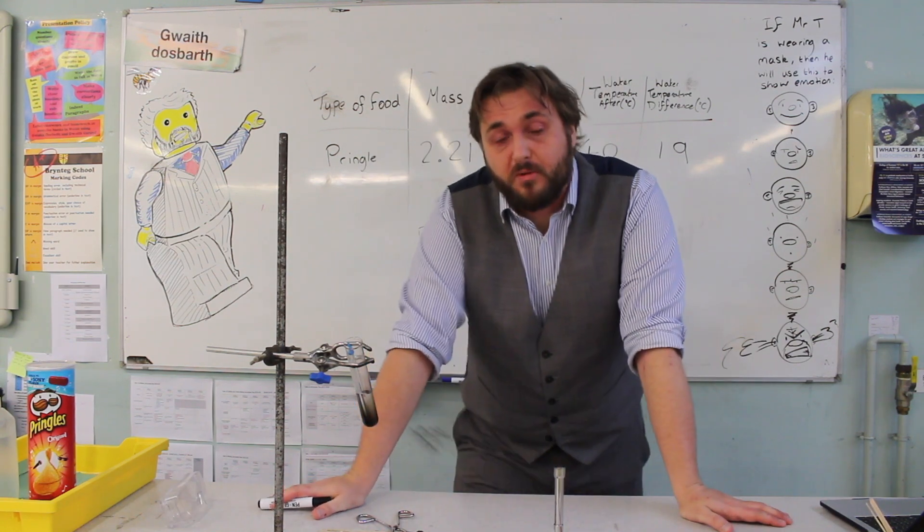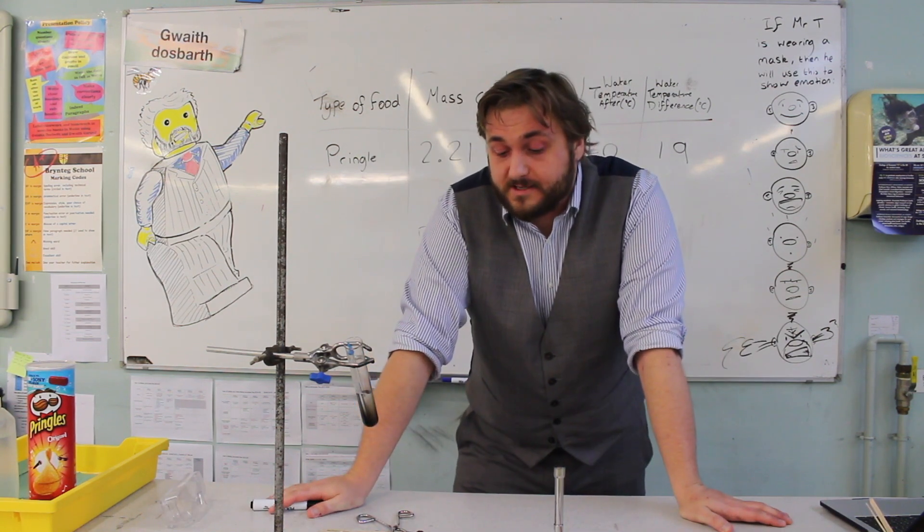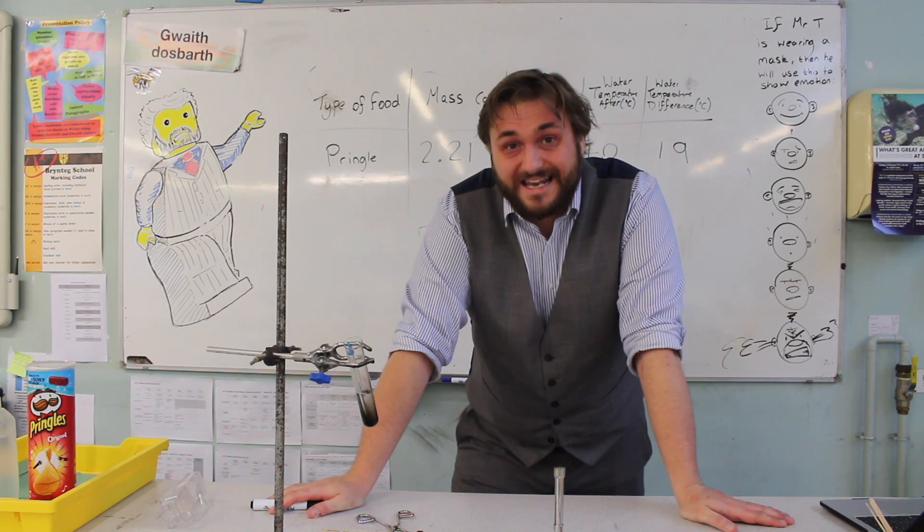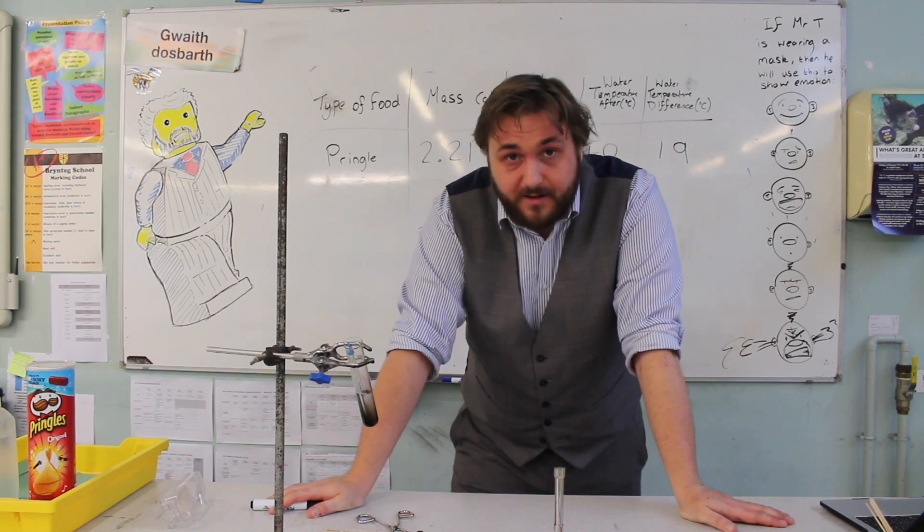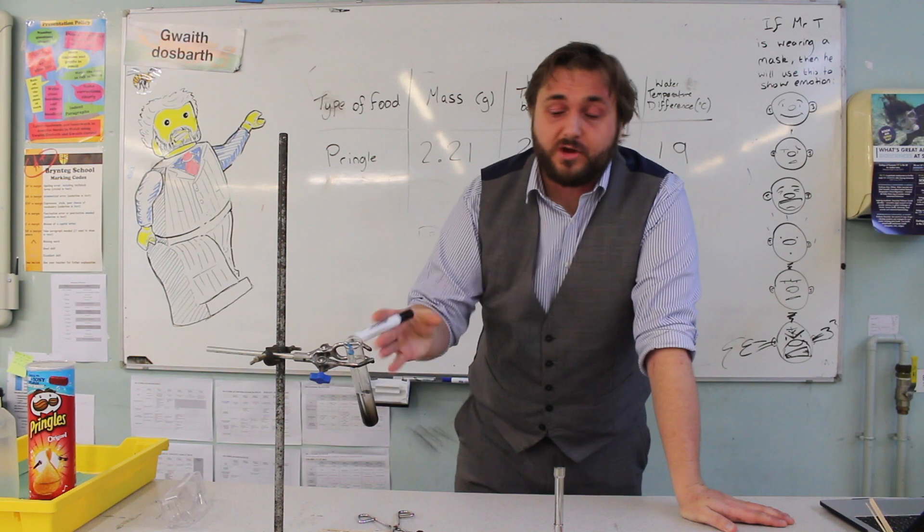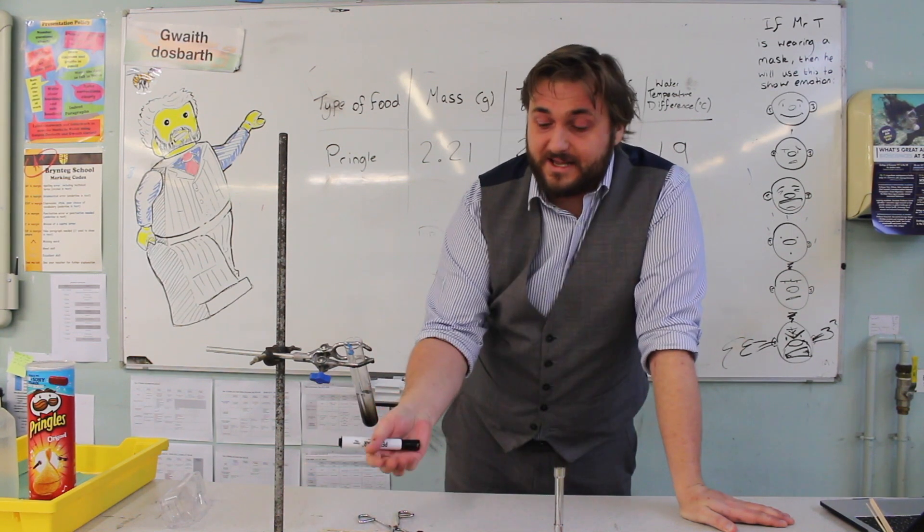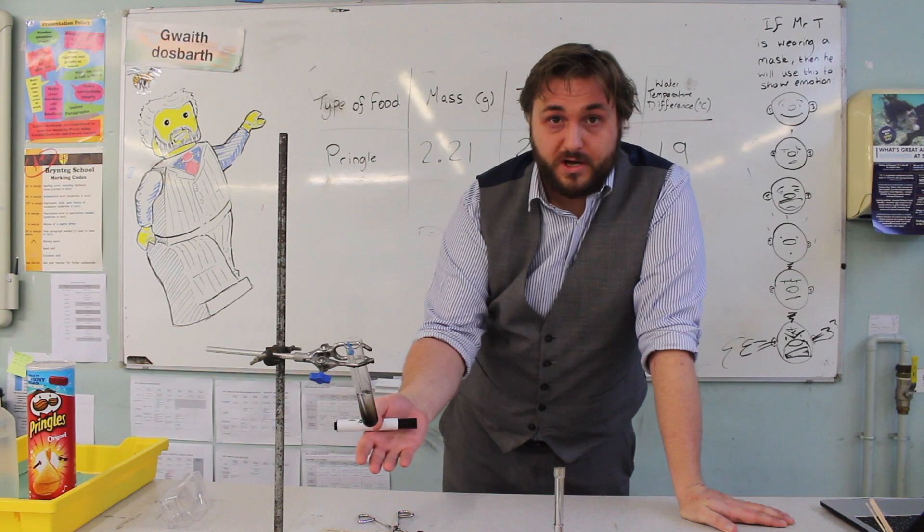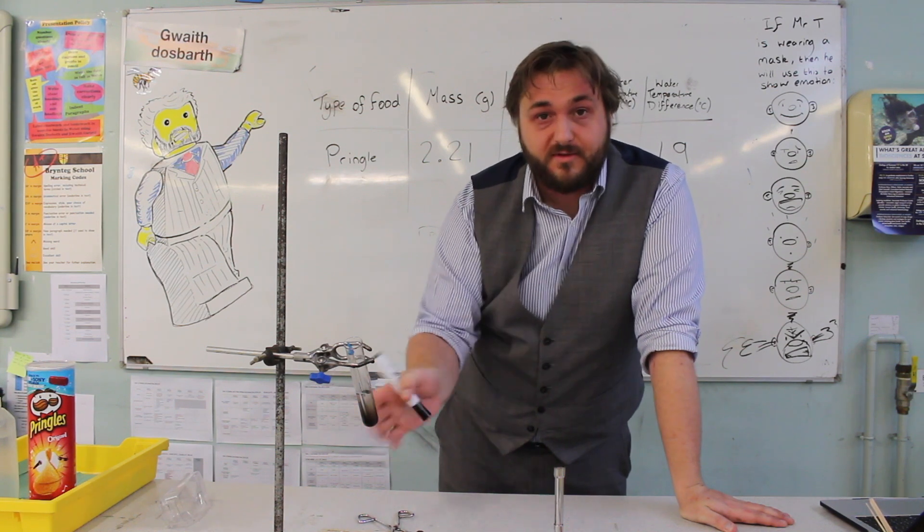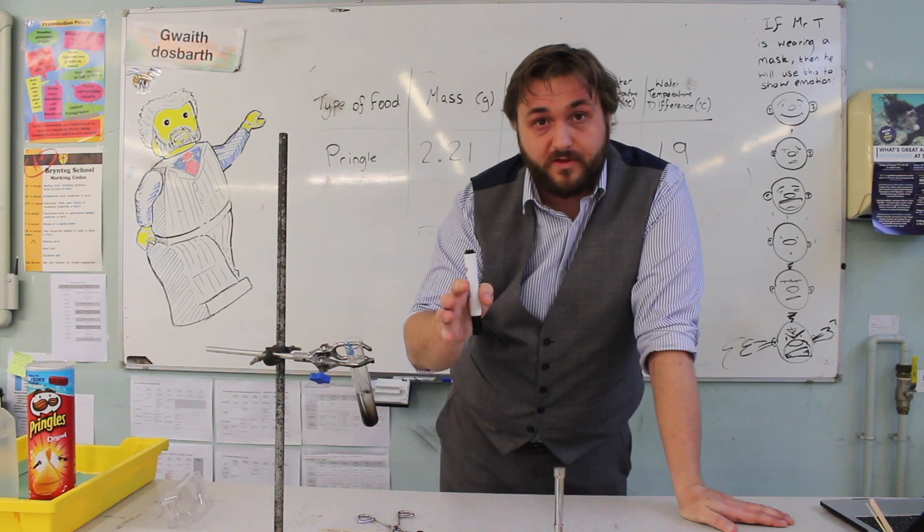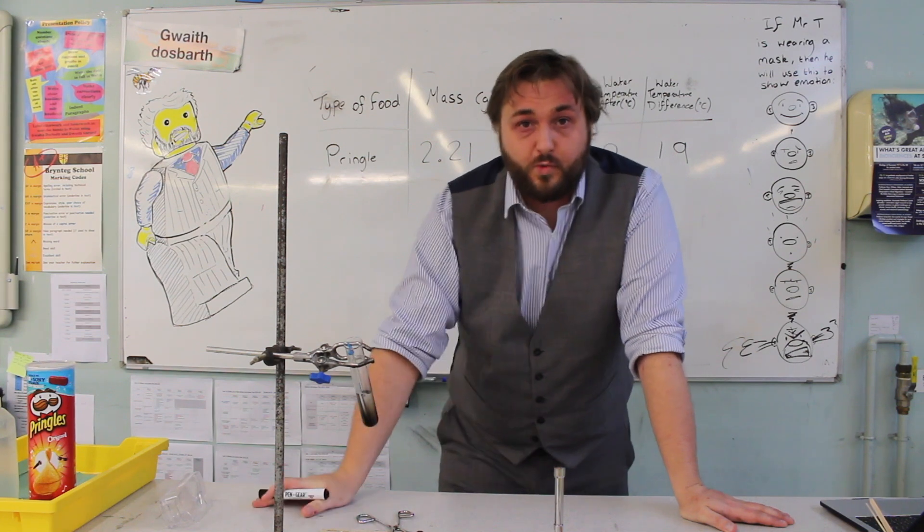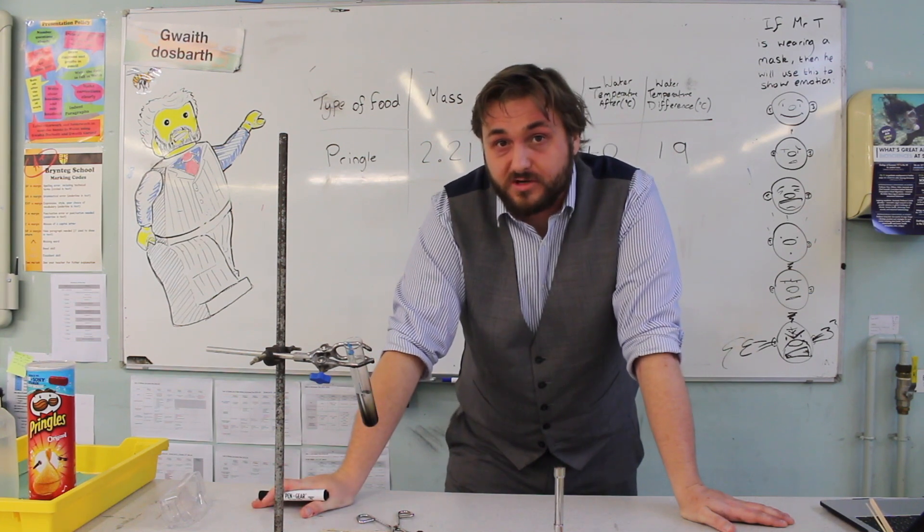There are a few problems with this experiment in that when you've lit a crisp on fire, it's also releasing light energy as we can see the flame. That light energy isn't going into heating up the water, therefore that energy is lost. As well as that, even if you're holding your crisp underneath your boiling tube, some of the heat from the flame is going to go either side of the boiling tube and it's going to miss the water completely, and again that energy is going to be lost.